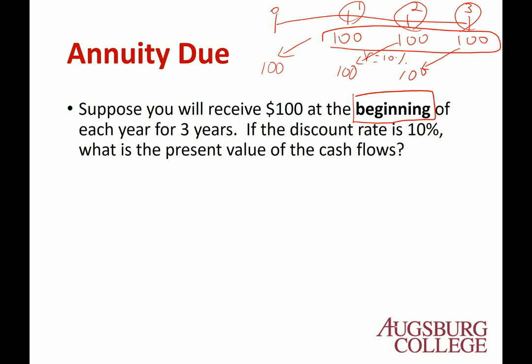To solve the Annuity Due problem, you change it to the BGN mode. Now the calculator assumes all the cash flows occur at the beginning of the period.